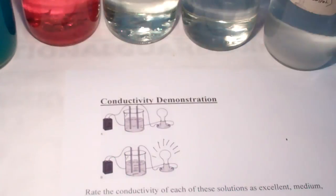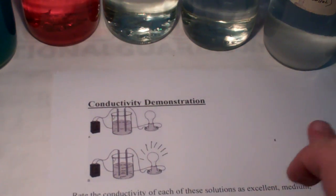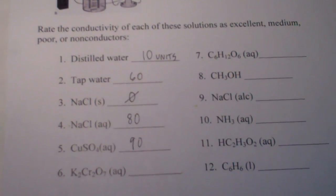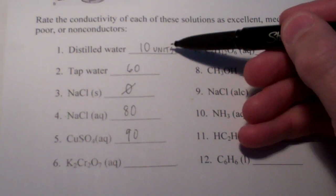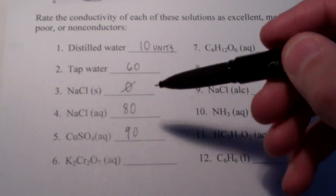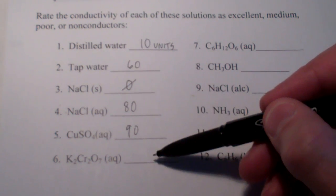So, put a lid on that. And we'll record that in our data table at 90 of our conductivity units. So, let's press this paper up, make sure you guys can see our data so far. 10 for distilled water, 60 for tap. Sodium chloride solid, zero. Sodium chloride dissolved in water, 80. Copper sulfate dissolved in water, 90.